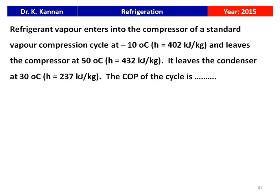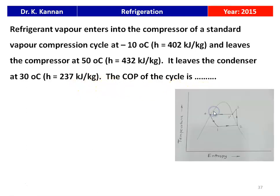The next question is from the 2015 question paper. The refrigerant vapor enters the compressor of a standard vapor compression cycle at minus 10 degree Celsius, where the enthalpy is 402 kJ/kg, and leaves at 15 degree Celsius with enthalpy 432 kJ/kg. It leaves the condenser at 30 degree Celsius with enthalpy 237 kJ/kg. In a standard vapor compression cycle, the compressor inlet is saturated vapor and the condenser outlet is saturated liquid.